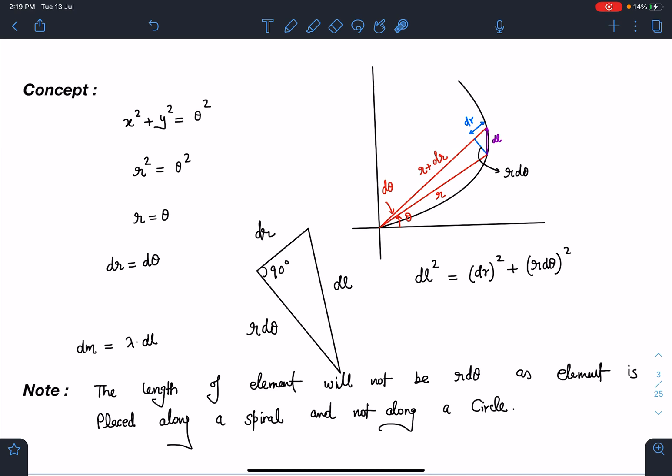That is what I have written: the length of element will not be r·dθ as the element is placed along a spiral and not along a circle. If it was a circle then it would have been r·dθ, but not in this case. In fact, an expanding spiral makes some angle here and this angle is pretty large compared to, you can say, one degree or two degrees. Normally 30 degree, 40 degree - this kind of angle comes.